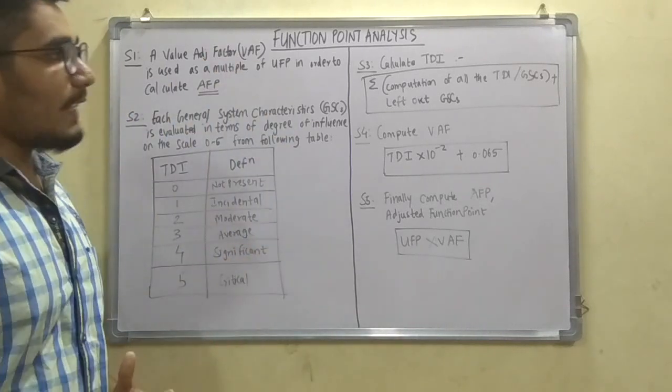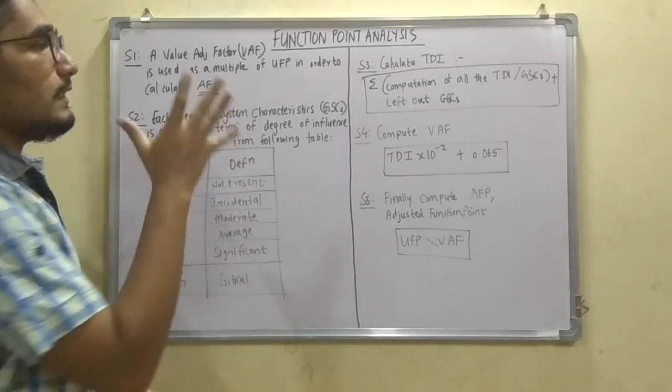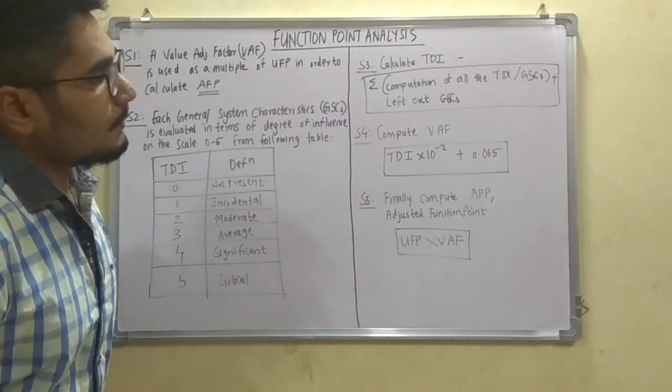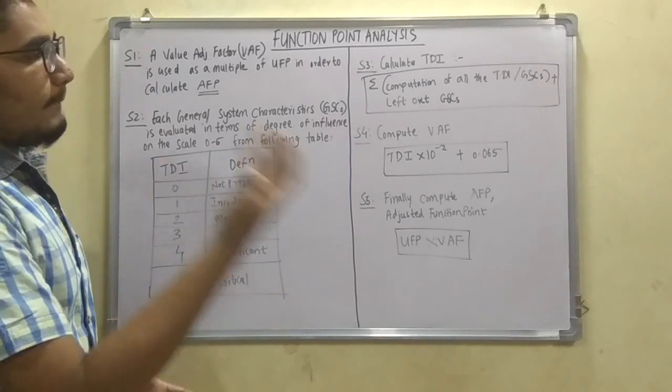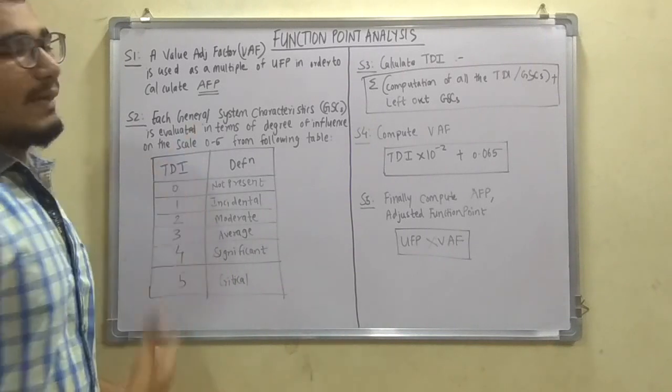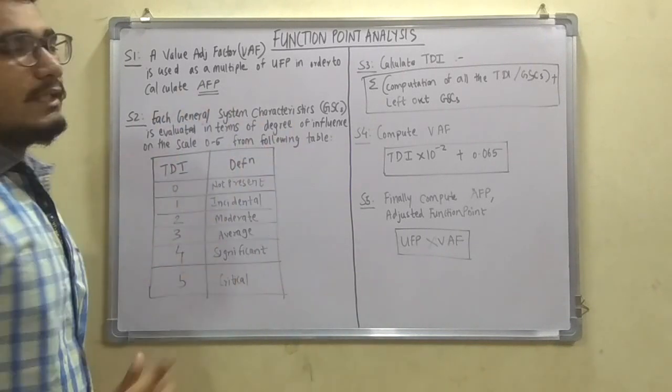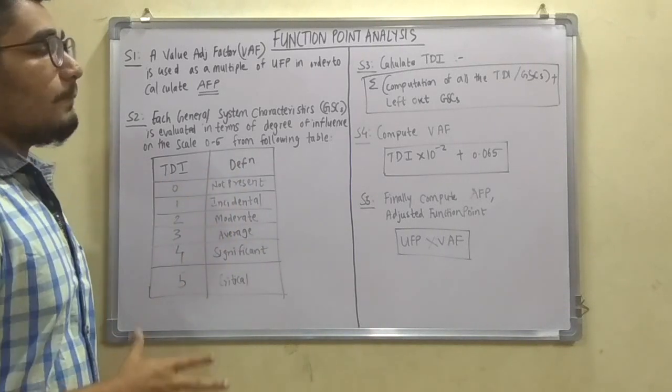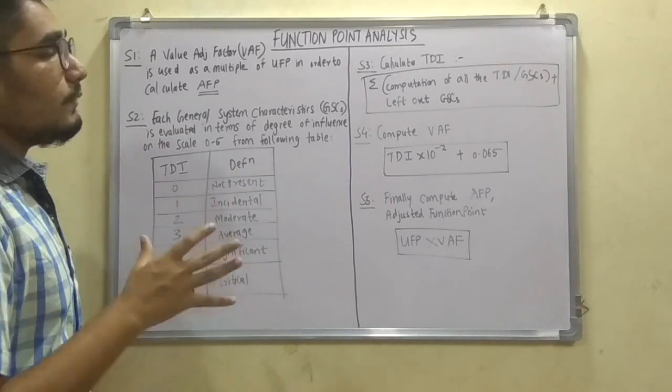Moving on to step 3, we can calculate the TDI, that is the total degree of influence, by computation of all the TDIs plus left out GSCs whichever is there that we have not calculated. So by summing up all these we get the actual TDI. Next is step 4, that is compute the VAF, that is the value adjustment factor.